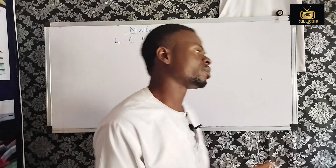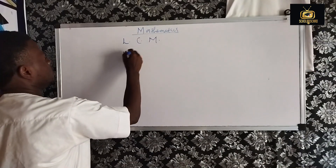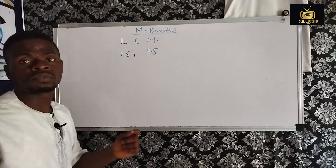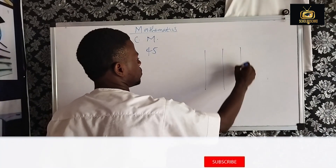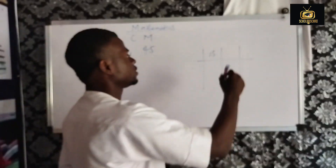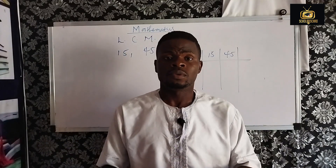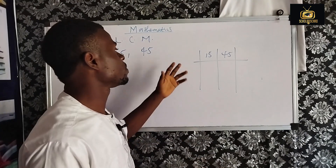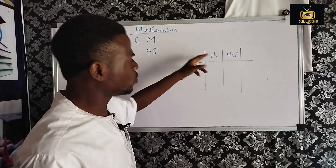Now let us look at some questions. We have 15 and 45 — this is the LCM of two numbers. We write 15 and we write 45, and we use our prime numbers to find the LCM. The first prime number is 2.